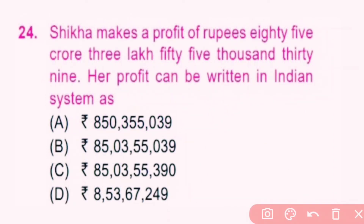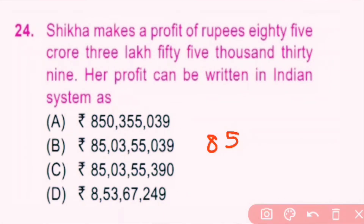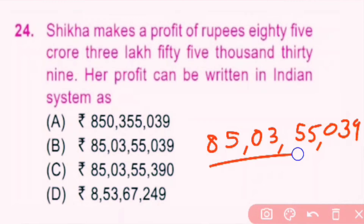Question number 24. Shikha makes a profit of rupees 85 crore 3,55,039. Her profit can be written in the Indian system as 85,03,55,039. B is the correct answer.